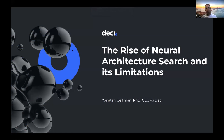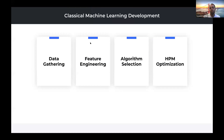I'm going to talk about neural architecture search. In classical machine learning, the development lifecycle was as follows: data gathering, then feature engineering in order to train a classical machine learning algorithm — be it random forest, logistic regression, or any of those — and then iteration on the hyper parameter optimization together with the selected algorithms and the given dataset.